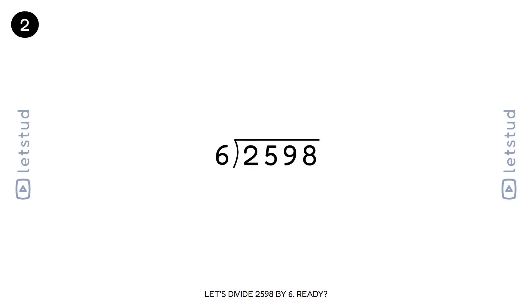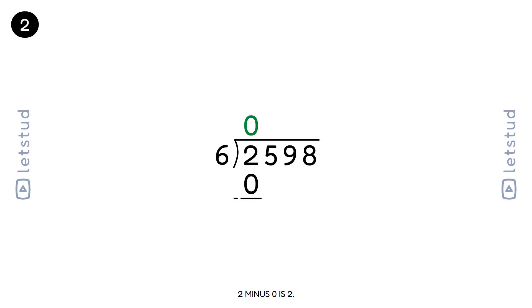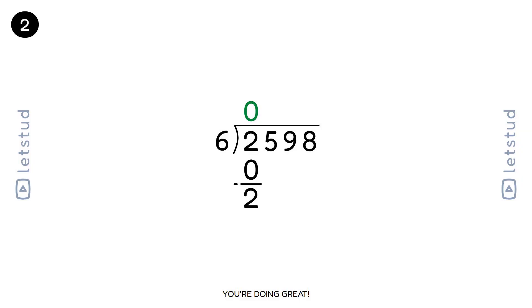Let's divide 2598 by 6. Ready? We start with the first digit, 2. 6 fits into 2 zero times. 0 times 6 is 0. 2 minus 0 is 2. You're doing great.